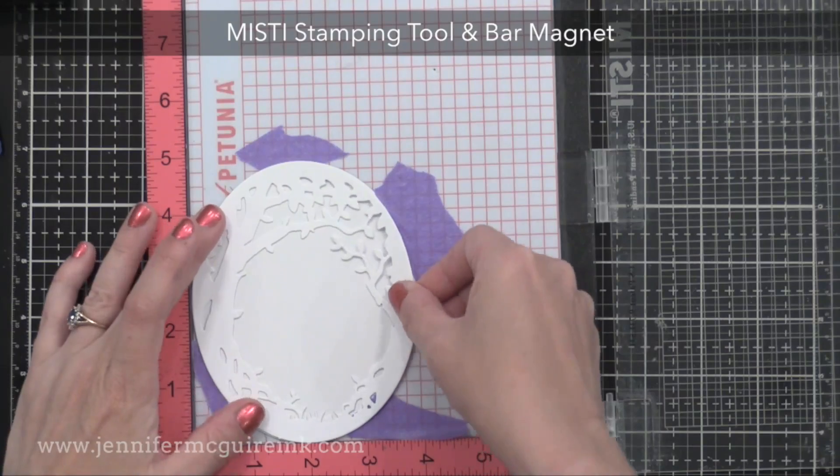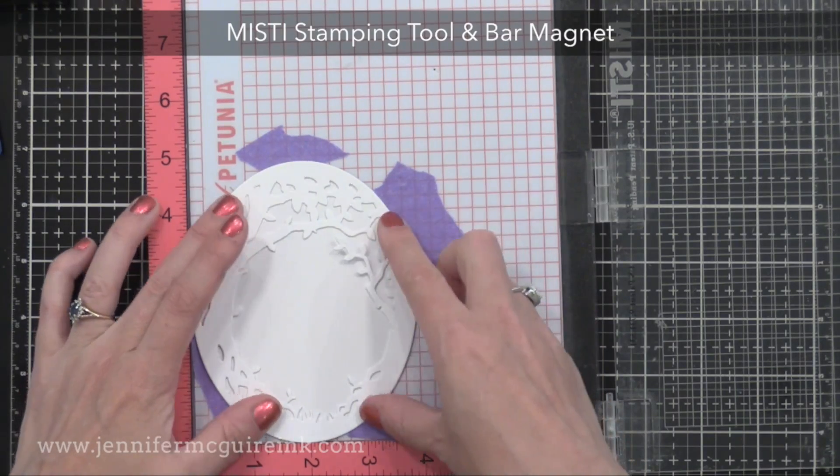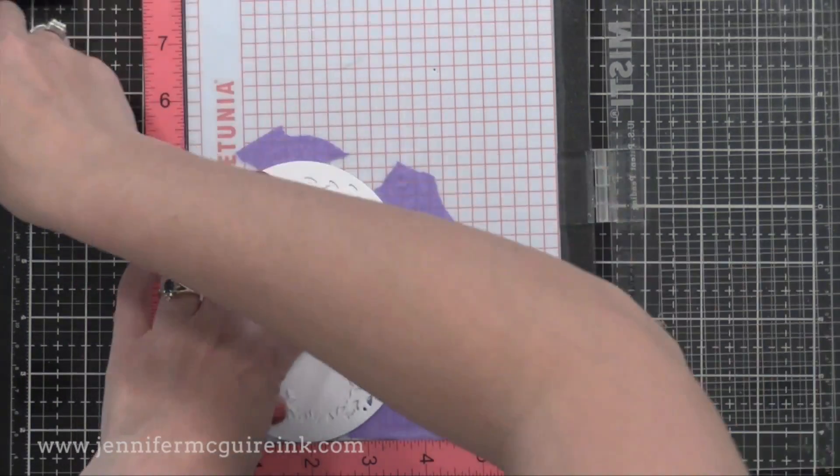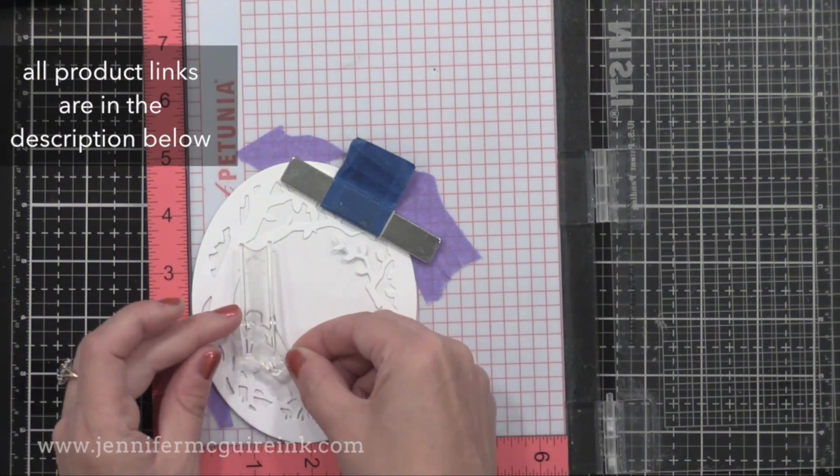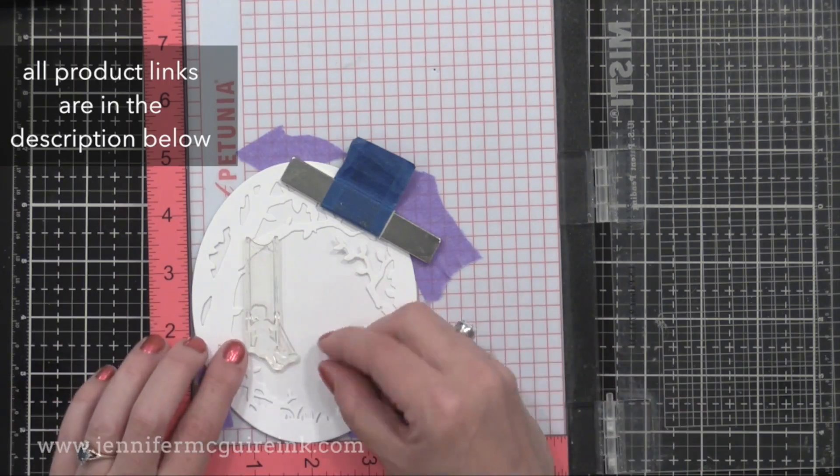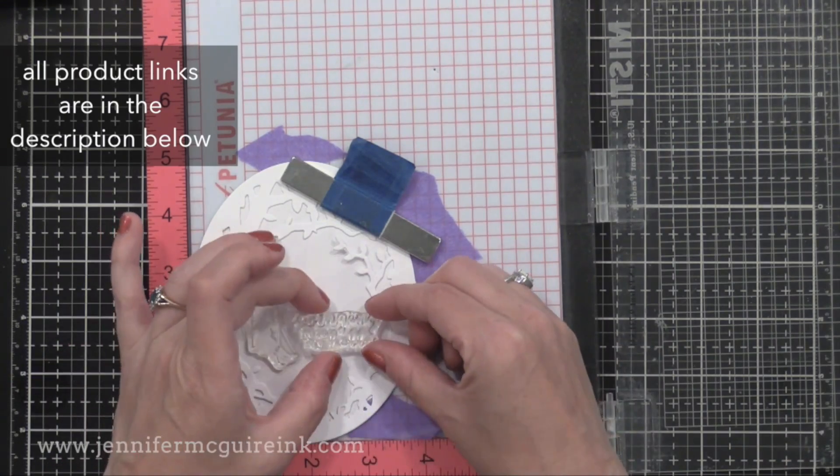I'm taping that paper into my Misti and then I'm placing the frame over it temporarily just so I can position my stamps. You don't need a Misti stamping tool for this technique. However, since I'm making multiple cards I thought it would be handy.